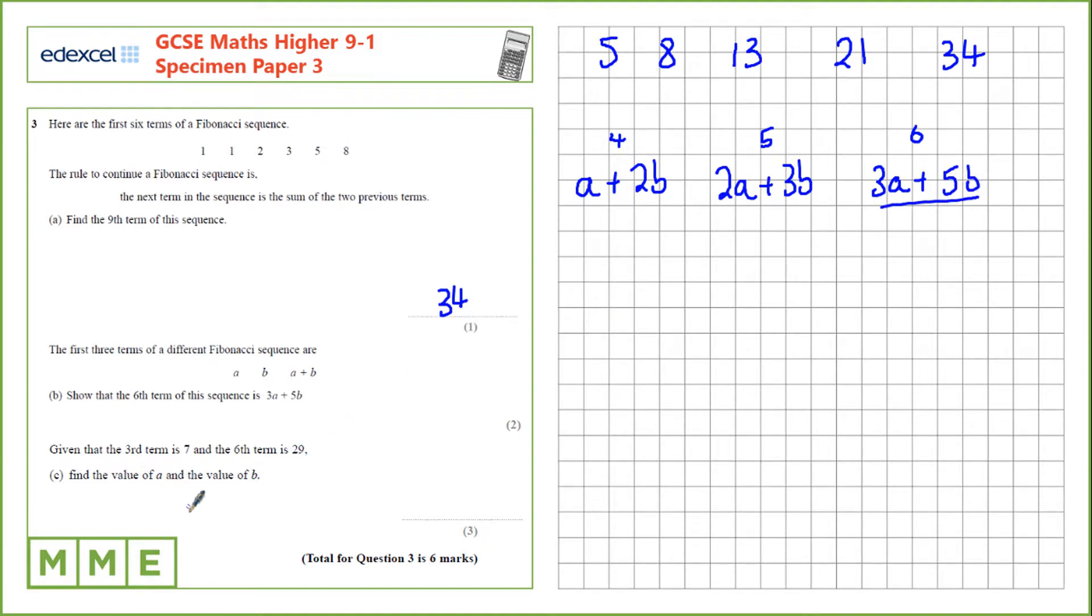Given that the third term is 7 and the sixth term is 29, we need to find the values of a and b. So the third term here is a plus b, so we can write a plus b equals 7. The sixth term is 3a plus 5b,